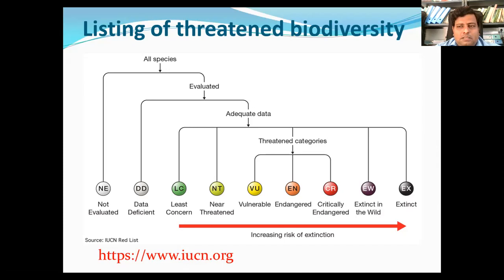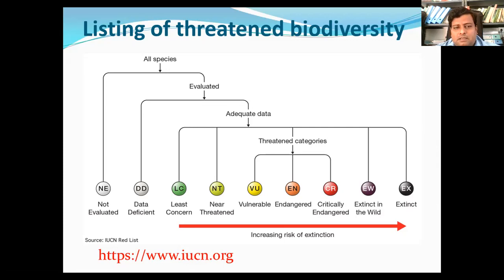VU stands for Vulnerable, and this also comes under the threatened category. The category contains those species that possess a very high risk of extinction as a result of a rapid population decline of 30% to more than 50% over the previous three generations — that is, 10 years — and a current population size of fewer than 1,000 individuals.